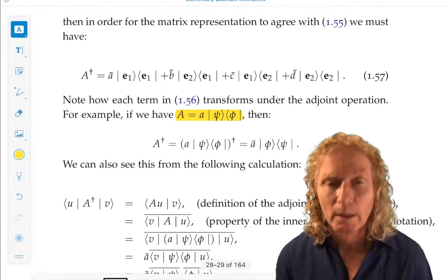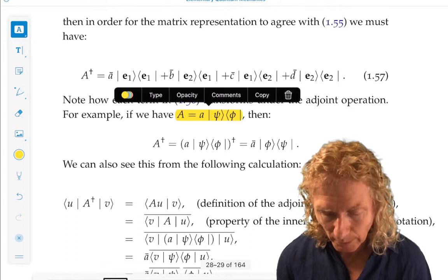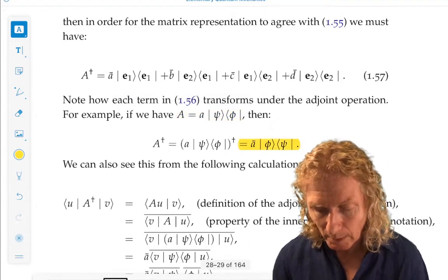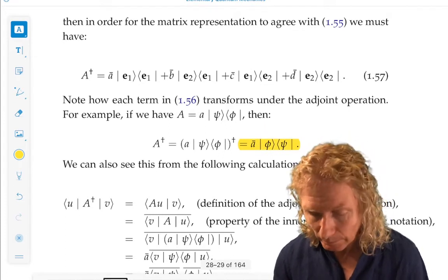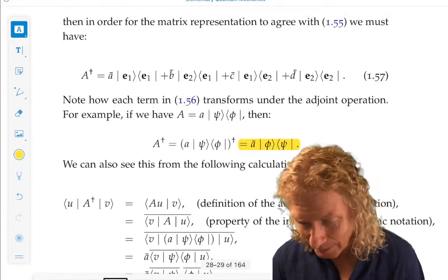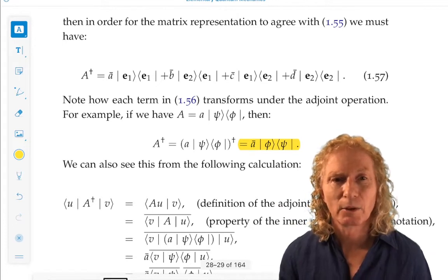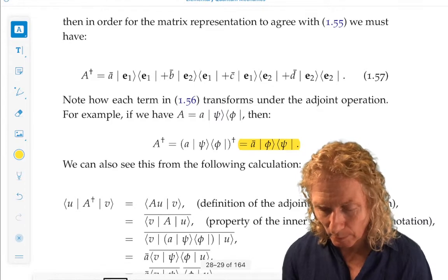From what I just said, if we look at the adjoint of A, defined in this way, it's going to be a complex conjugate, a-bar, Ket Phi Bra Psi. So, let's try to look at that a little more deeply.